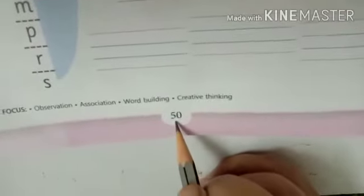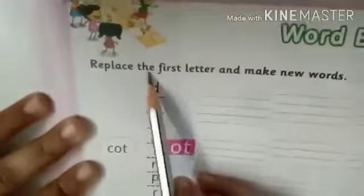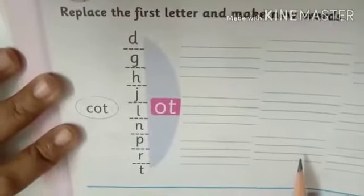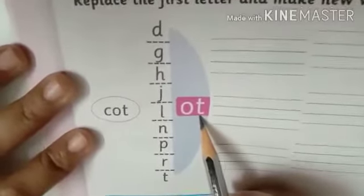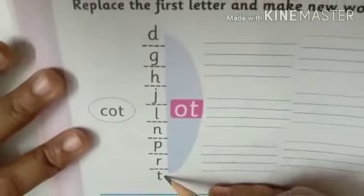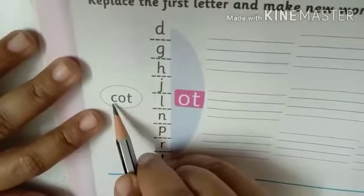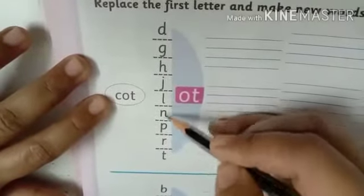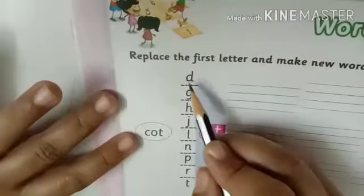Now page number 50. Our lesson is word building and the topic is: replace the first letter and make new words. First of all, here we have written D.